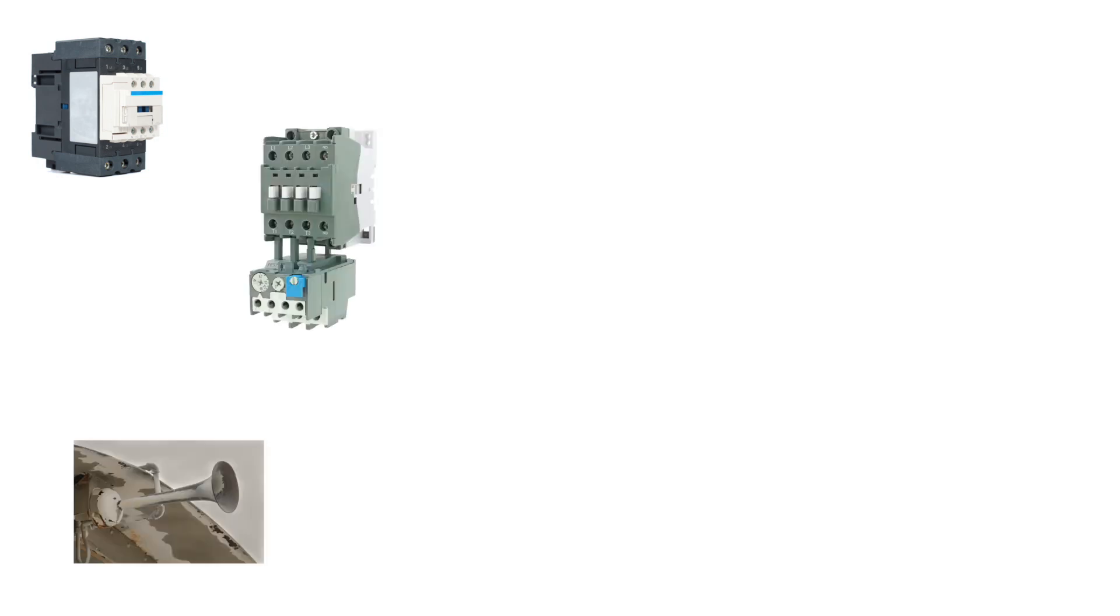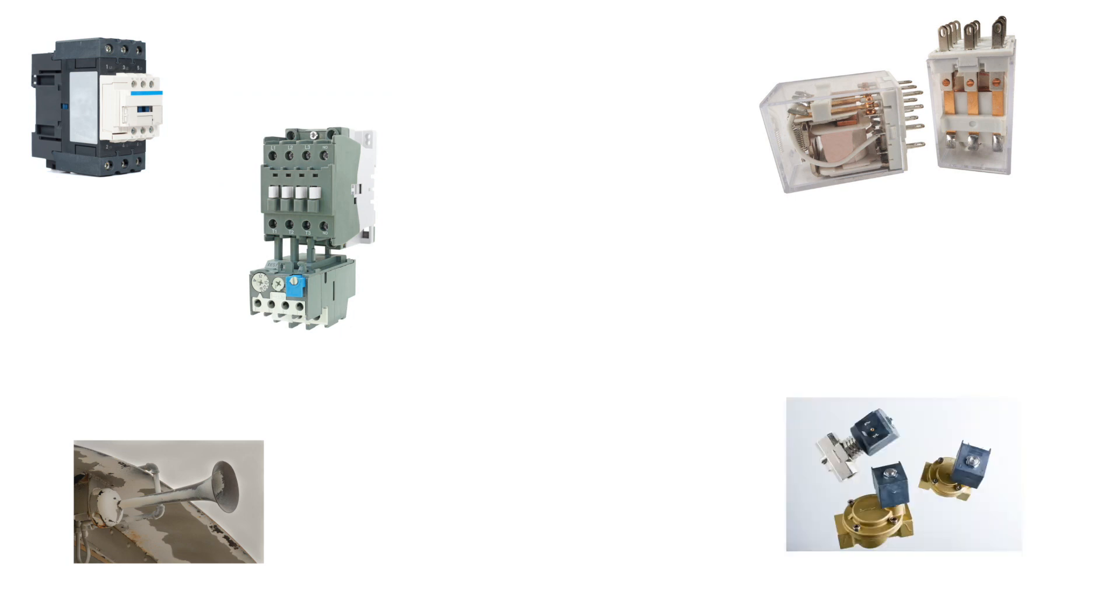The output side of the control circuit provides the action and includes devices such as contactors, motor starters, horns, relays, solenoids, indicator lights, and more.